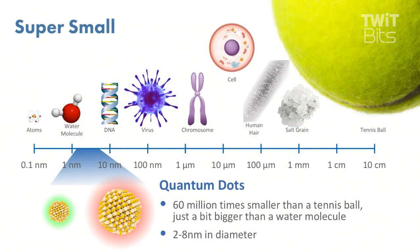Let's take a look at graphic number one to show the size scale we're talking about. I like to think of quantum dots as being about the size of a protein, which is a large molecule. On this logarithmic scale — factors of 10 between each entry — you can see that a quantum dot is bigger than a water molecule but smaller than DNA or viruses. The interesting thing is the optical properties depend on exactly what size they are.